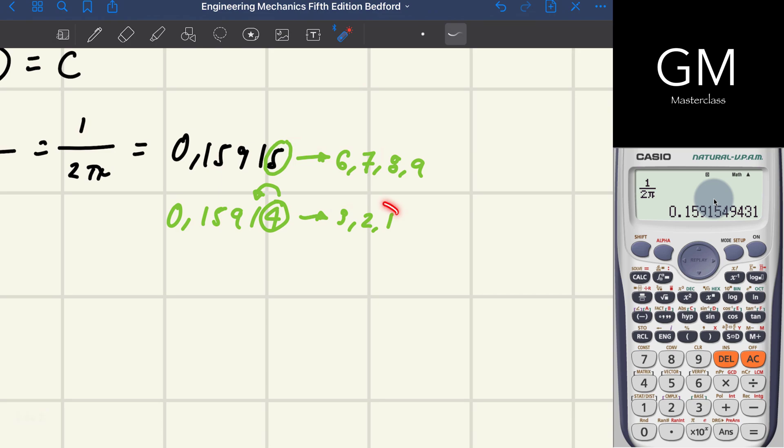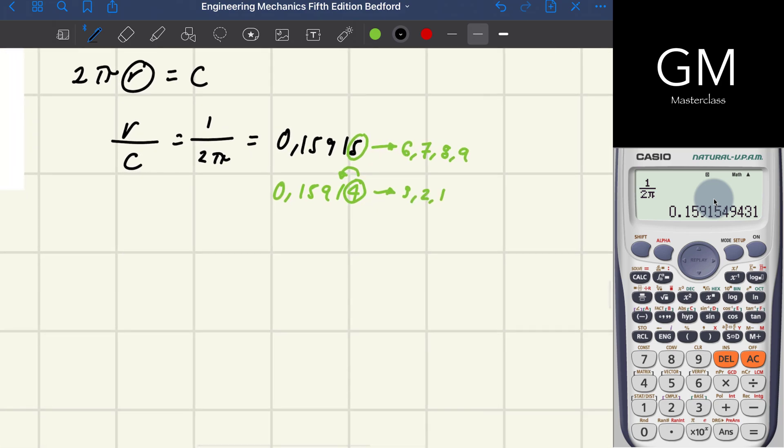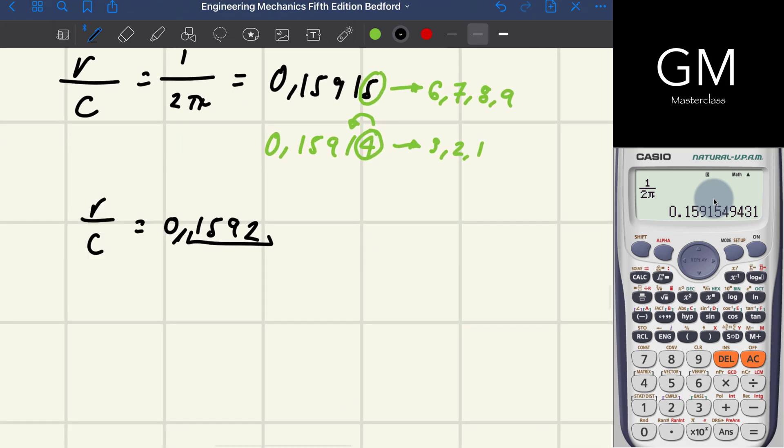As I said, in this case with 5, you round up to the next number. So the result is R divided by C equals 0.1592, with 4 significant digits.